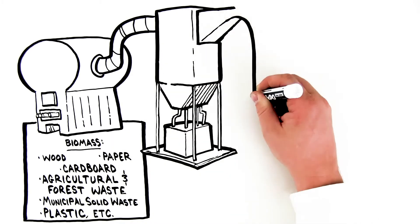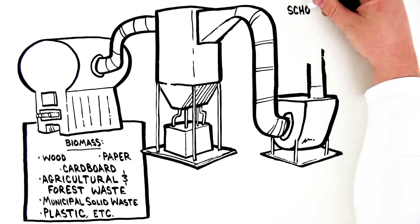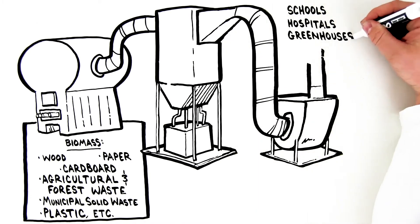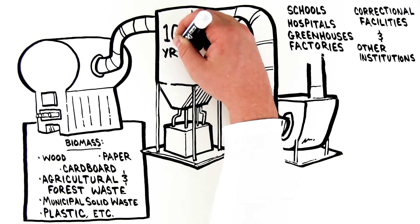Durable, proven, and reliable, AgriPower systems are already powering over 60 schools, hospitals, greenhouses, factories, correctional facilities, and other institutions, with some in operation for more than 10 years.